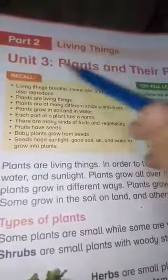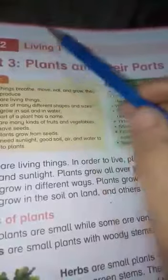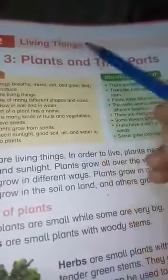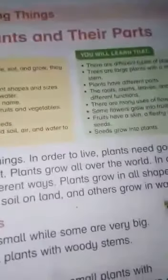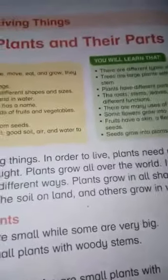Assalamu alaikum students, it's science time. Open your science textbook to page number 18 and 19. Today we have a reading of part 2, unit number 3. The title of this part is 'Living Things' and the unit name is 'Plants and Their Parts.' In this chapter we are going to learn about plants, their parts, and their structure.